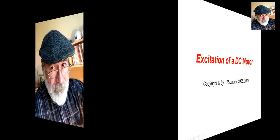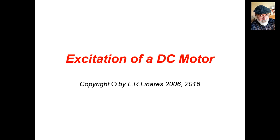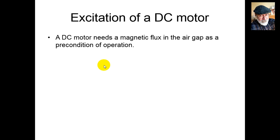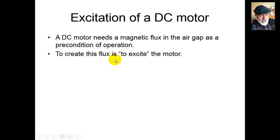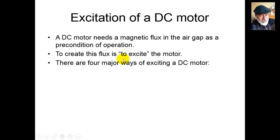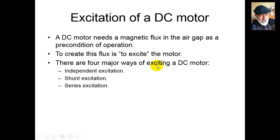Let's talk about the excitation of a DC motor. To work, a DC motor needs a magnetic flux in the air gap. To create this flux is what we mean by exciting the DC motor. There are four major ways of exciting a DC motor: independent excitation, shunt excitation, series excitation, and compound excitation.